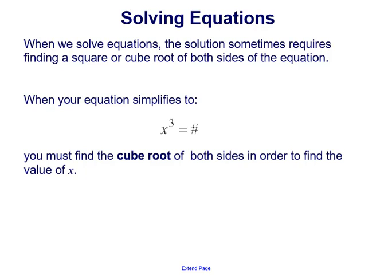You need to use a cube root when the equation simplifies down to x cubed equals a number, because you must find the cube root of both sides in order to find the value of x, to get that variable isolated or completely alone on the left side of the equal sign.